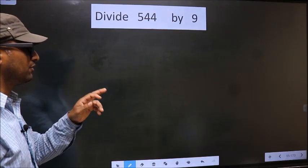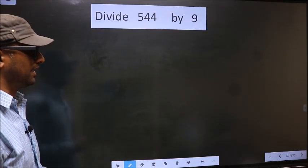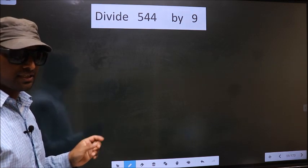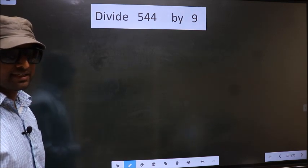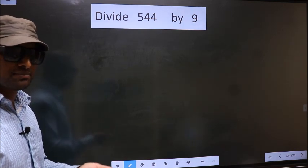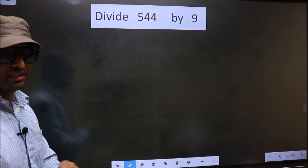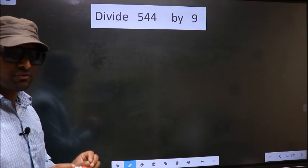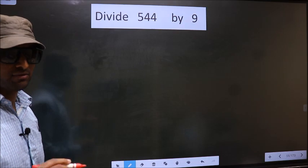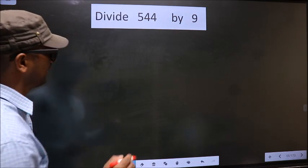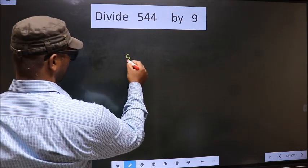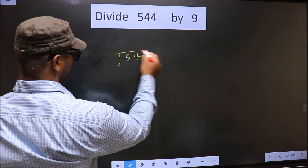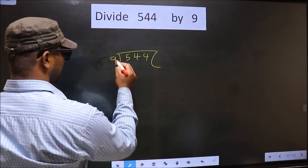Divide 544 by 9. While doing this division, many do this mistake. What is the mistake that they do? I will let you know. But before that, we should frame it in this way — 544 divided by 9 here.